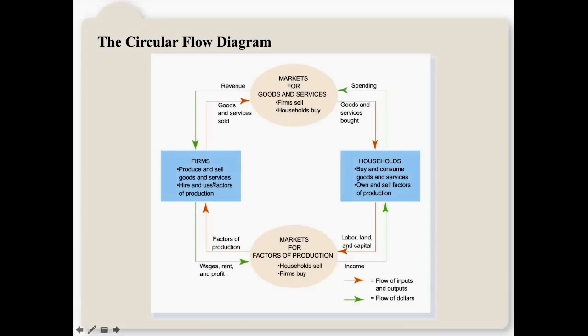Now, the firms take those factors of production and convert them into goods and services, which they sell back to households. And this, for the firms, tends to become revenue. On the inner loop, we can see the physical flow, where the factors of production and goods and services move. Moving in the opposite direction, the outer loop, we see the monetary flow, where money tends to move. This is an incredibly simplistic model. However, it's not a terrible model for the way basic economic transactions take place.